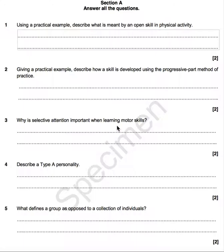Number one: using a practical example, describe what is meant by an open skill in a physical activity. It's important that you always notice there are two marks available for each of these questions. Of course, it could be a one marker or maybe a three marker, but make sure you check that, as it should influence what you actually write.